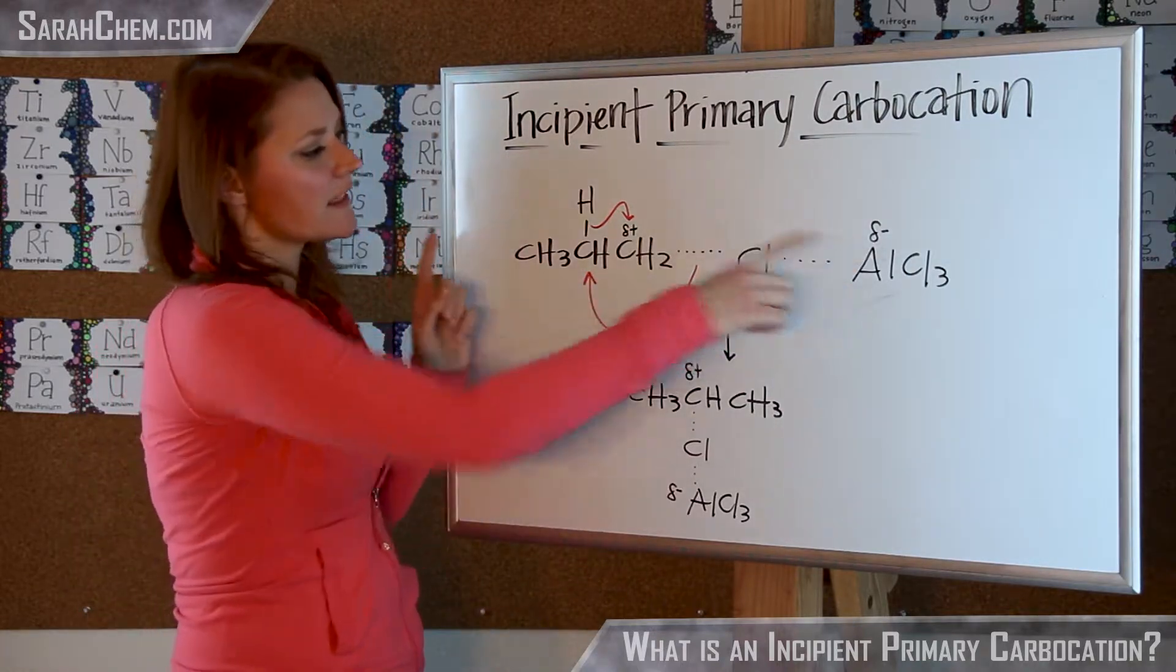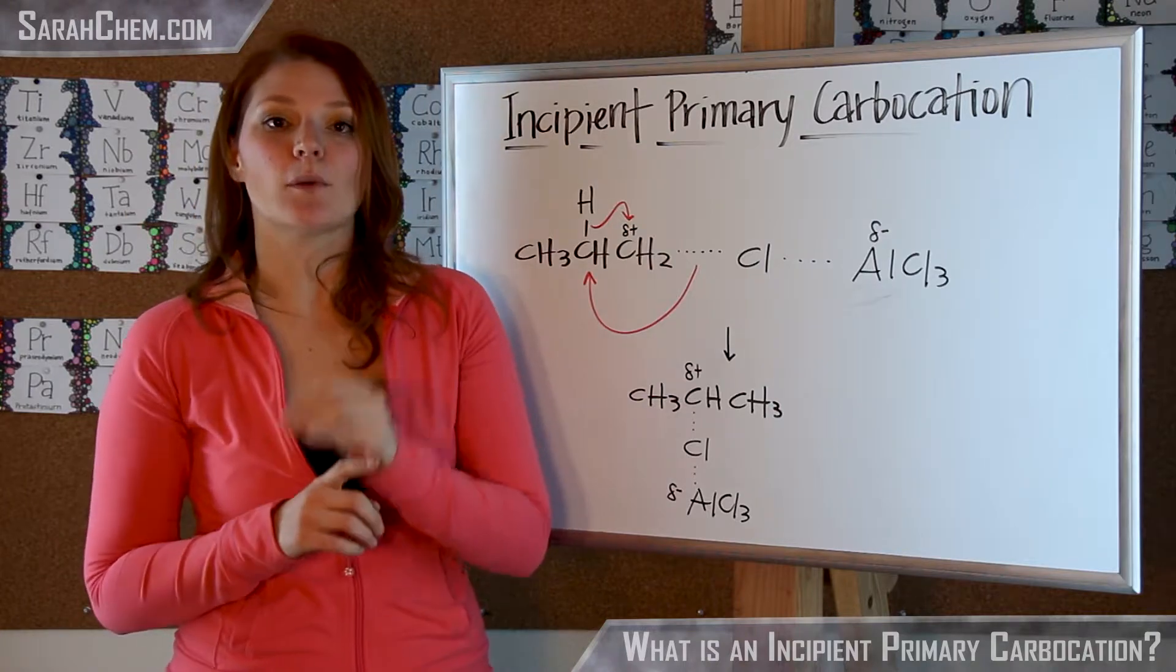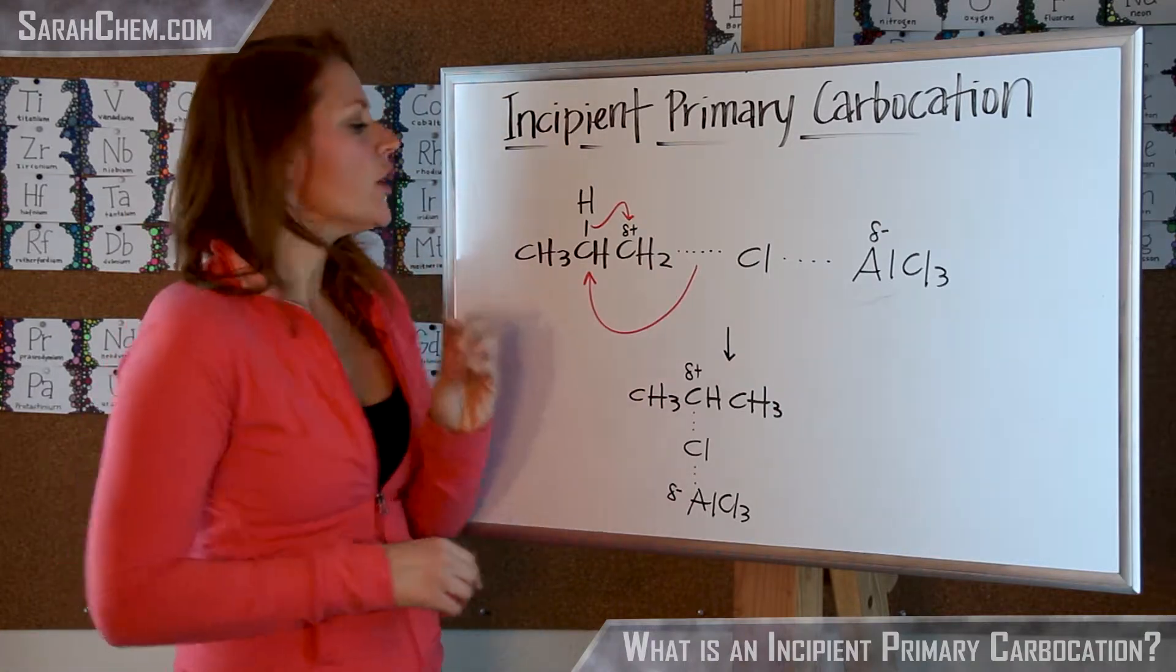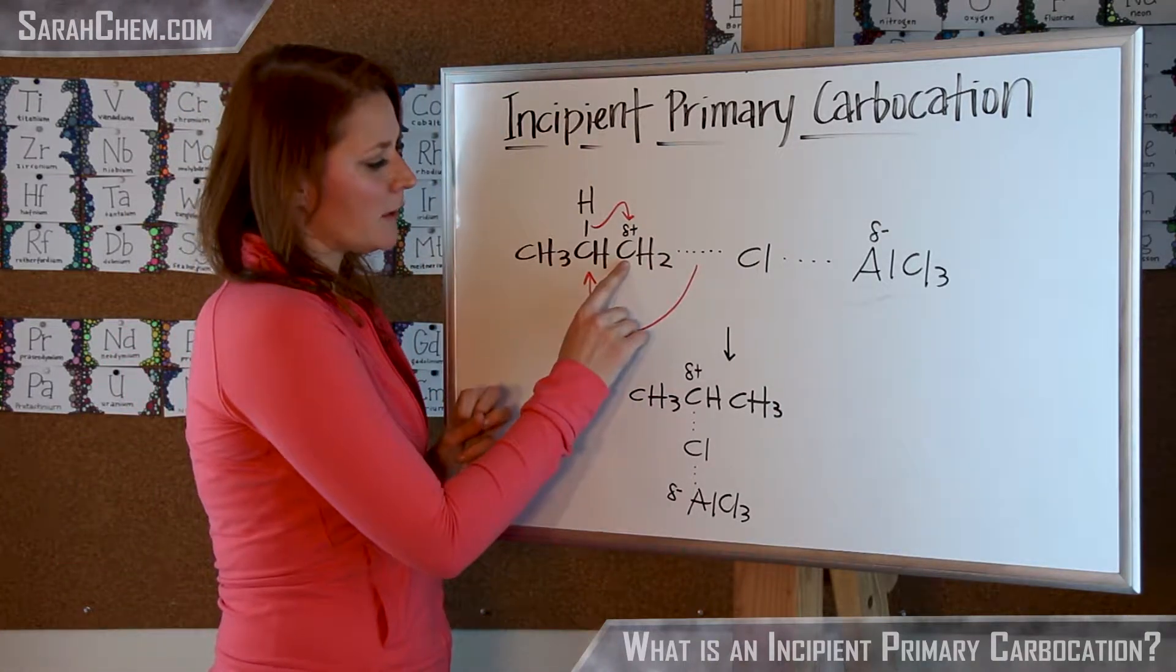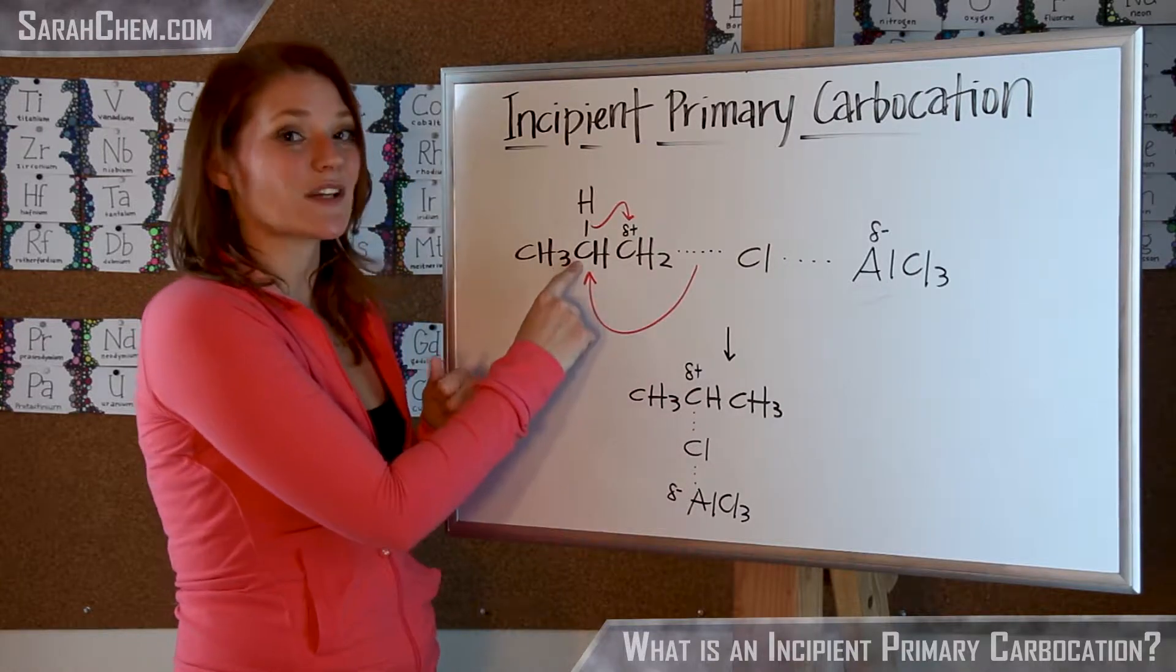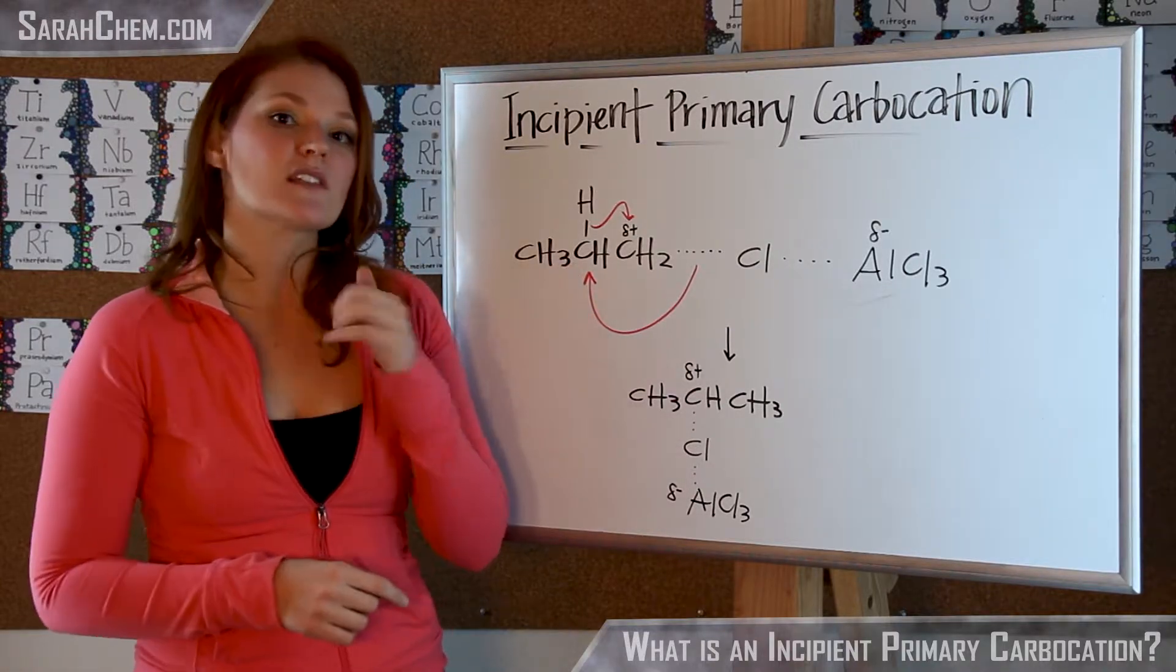Additionally, even though this is going to be incipient, it is still able to do rearrangements. So if we take a look here, this is a primary carbocation, but this one here is a secondary carbocation. That would be more stable to form.